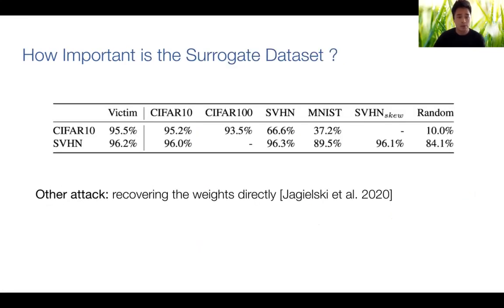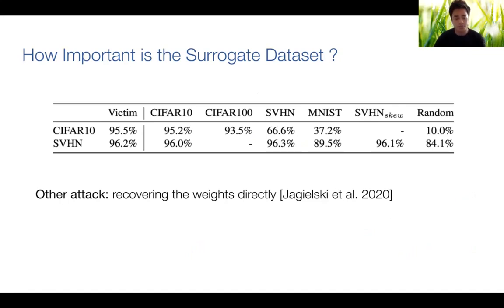One problem, though, is that the surrogate dataset is very important for these attacks. If the training data distribution is too different from the original training data, then the accuracy significantly drops, as you can observe in our experiments.